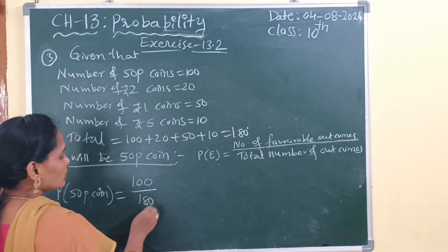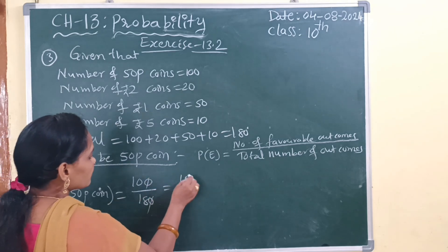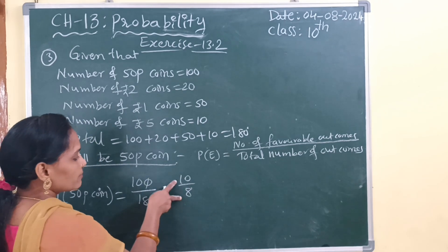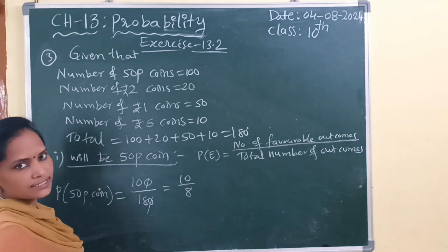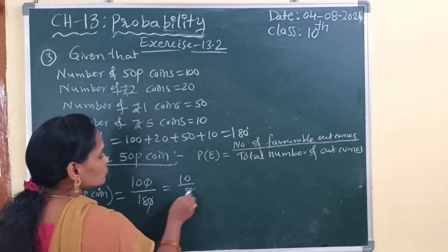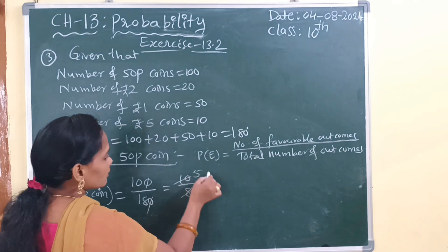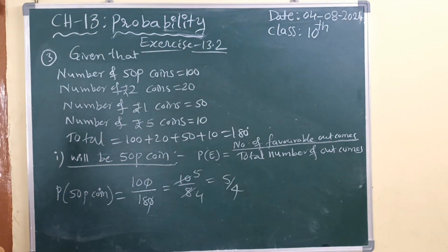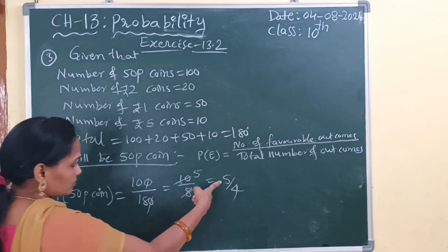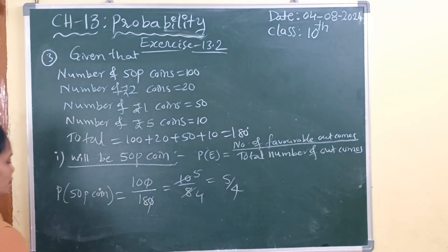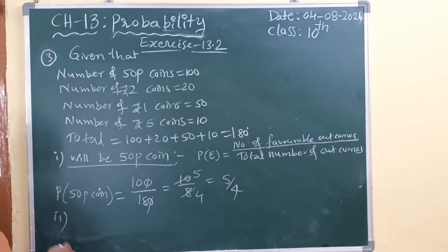The zeros will get cancelled — 10 by 8. Here there is a possibility to do cancellation. 2 fours are 8, 2 fives are 10. So 5 by 4 is the answer. The probability of getting a 50 paise coin is 5 by 4.